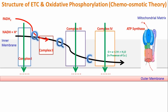You can think of it simply: each complex produces energy equivalent to 1 ATP. So when NADH transfers its hydrogen ions, moving through 3 complexes, it produces the equivalent of 3 ATP. When FADH2 transfers its hydrogen ions, bypassing complex 1 and passing only through complexes 3 and 4, it produces 2 ATP.